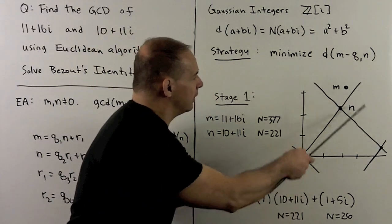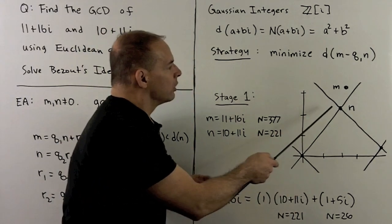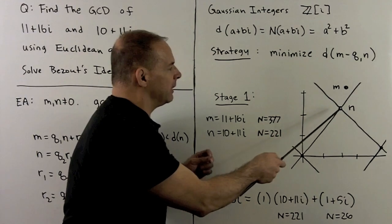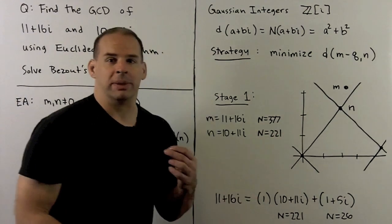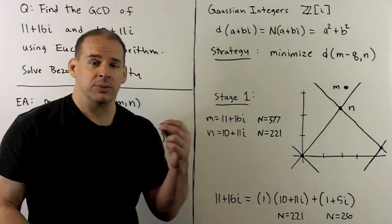We plot the picture as we have here. So you'll note, the closest lattice point to m is going to be n itself. So the q is going to be equal to 1. So that gives me the equation.